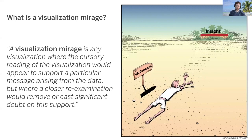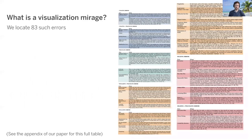What are we to do about these problems? Should we stop analyzing data visually? Burn our computers? Well, the first step in addressing a problem is often to name it. So we introduced a term for these errors: visualization mirages. We defined them to be any visualization where the cursory reading of a visualization would appear to support a particular message arising from the data, but where a closer reexamination would remove or cast significant doubt upon this support.